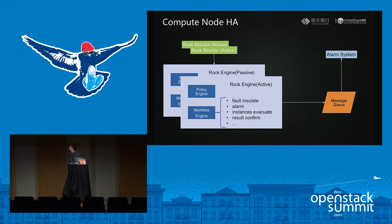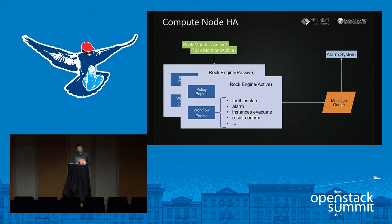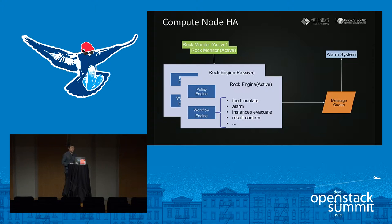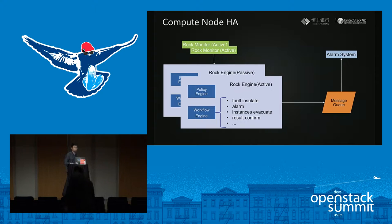ROCK can be customized just by changing the policy file or the workflow file to make OpenStack HA behave as desired. It's easy to deploy and understand. This software is now open-sourced on our GitHub at github.com/unitedstack. We will also try to put it into the OpenStack Big Tent to make it another choice for OpenStack HA.